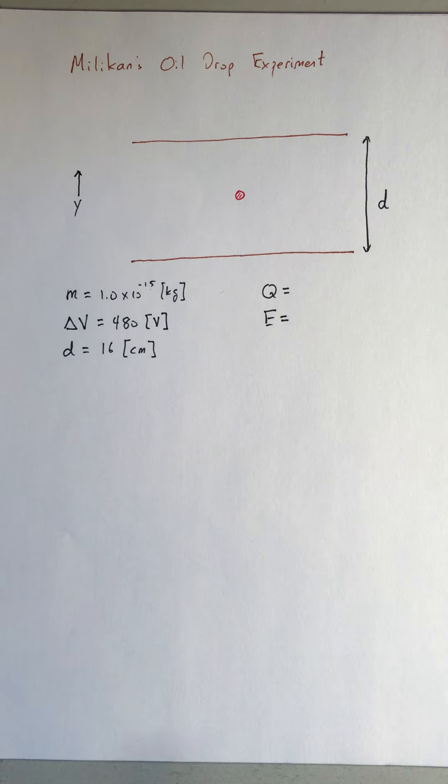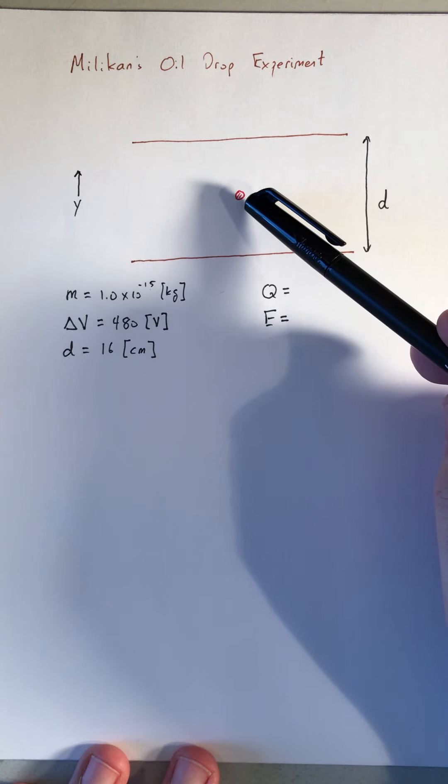So we have an example here. We're going to look at Milliken's oil drop experiment. We want to calculate a few things given some information. So in Milliken's oil drop, there's a charged drop.